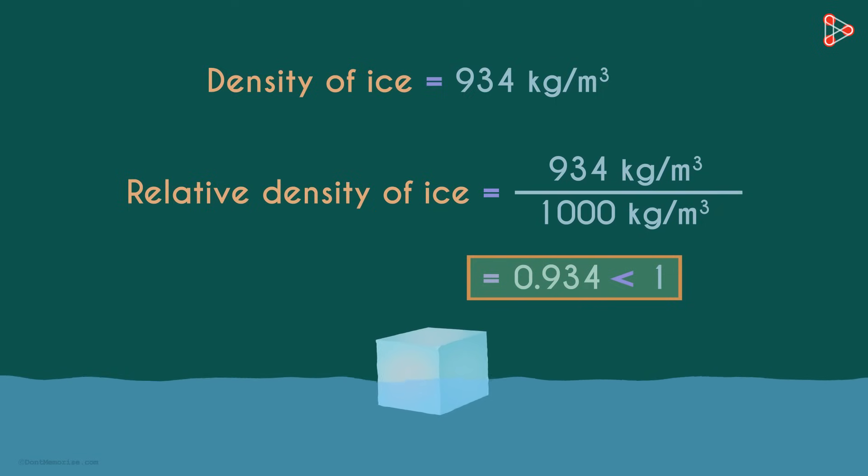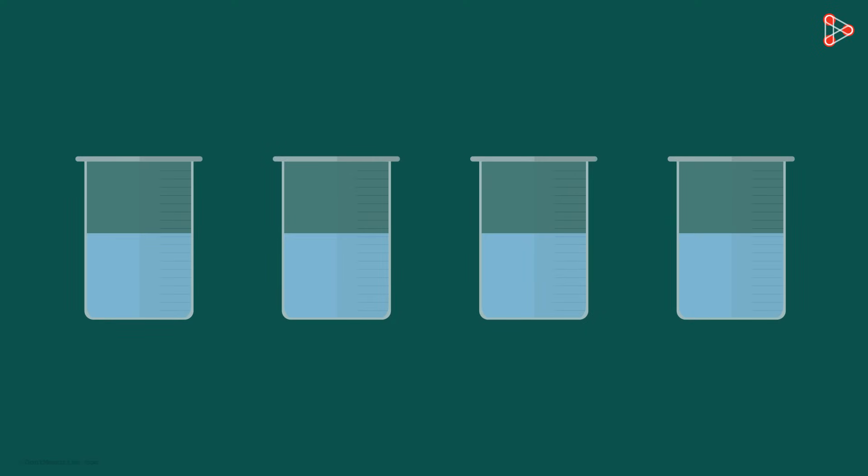We can understand this with a simple diagram. Take 4 beakers filled with water. In the first one, drop a substance with a relative density of 0.1. You'll see that it floats like this.